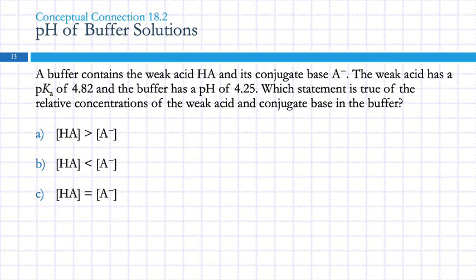Here's a conceptual question: a buffer contains the weak acid HA and its conjugate base A⁻. The weak acid has a pKa of 4.82. The buffer has a pH of 4.25. Which statement is true of the relative concentrations? The pH of 4.25 is lower than the pKa — a lower pH is more acidic. So we have more acid than base: the acid concentration must be larger than the conjugate base concentration.